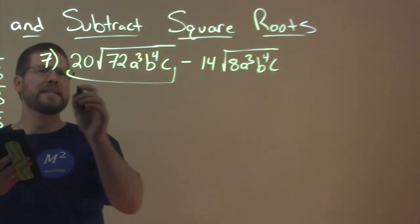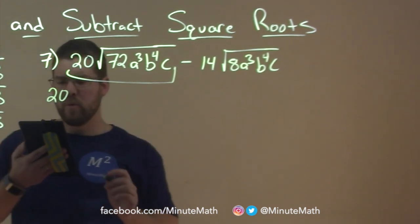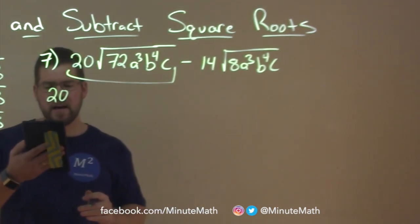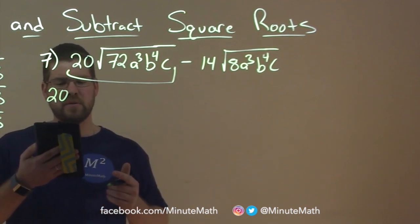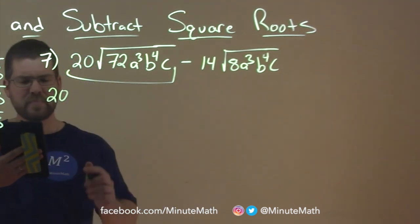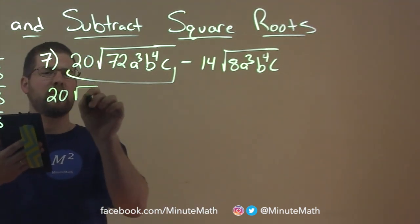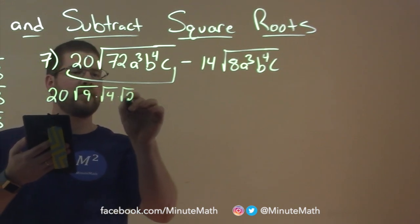Well, there's 20. 20 here just kind of stays on the outside. What about the inside? The inside, well, 72, that is 9 times 4 times 2. And so we can rewrite that to be square root of 9 times the square root of 4 times the square root of 2. Remember from our rules from earlier.